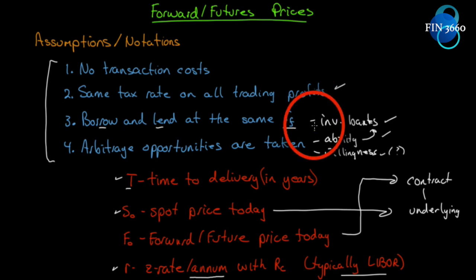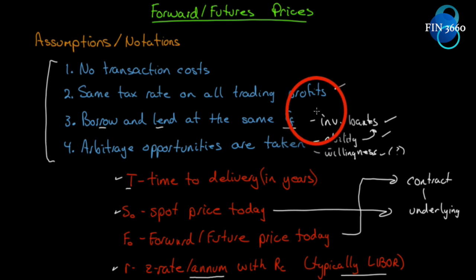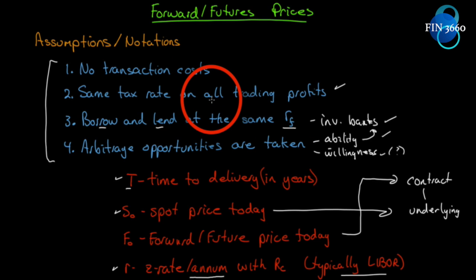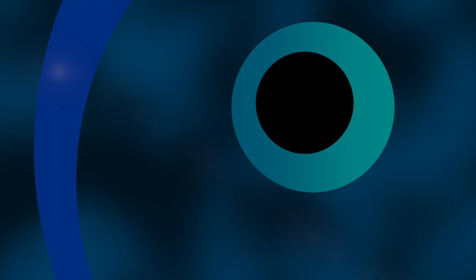We're looking for the zero rate per annum with continuous compounding — not a three-month or six-month rate — typically LIBOR. Don't forget the assumptions, because to understand the arguments we make later you have to know what we're assuming. We're not trying to describe what really happens for everyone — just what enough people can and are willing to do such that the price holds. We're simply setting an arbitrage argument to prove a pricing model. That's all we're doing.